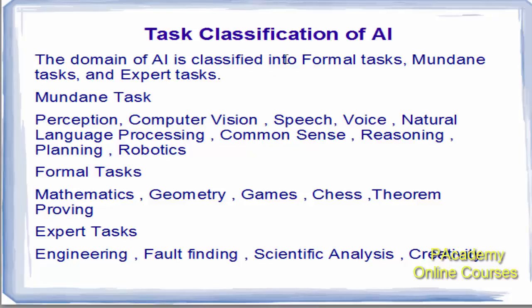So what tasks can be performed by the different research areas of AI? The domain of AI is classified into formal tasks, mundane tasks, and expert tasks. Mundane tasks include perception like computer vision, speech, voice, natural language processing, common sense, reasoning, planning, and robotics.